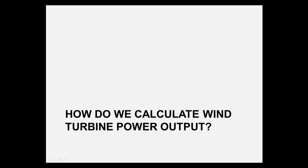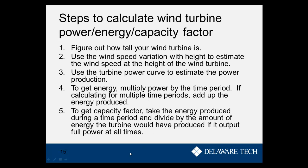Now we'll go over how to calculate wind turbine output. There are basically five major steps. Step one is figuring out how tall our wind turbine is. Step two is figuring out how fast the wind is blowing at that height. Step three uses the specific wind turbine's power curve to estimate power production. Steps four and five involve calculating energy from that power and determining the capacity factor for a given wind turbine.